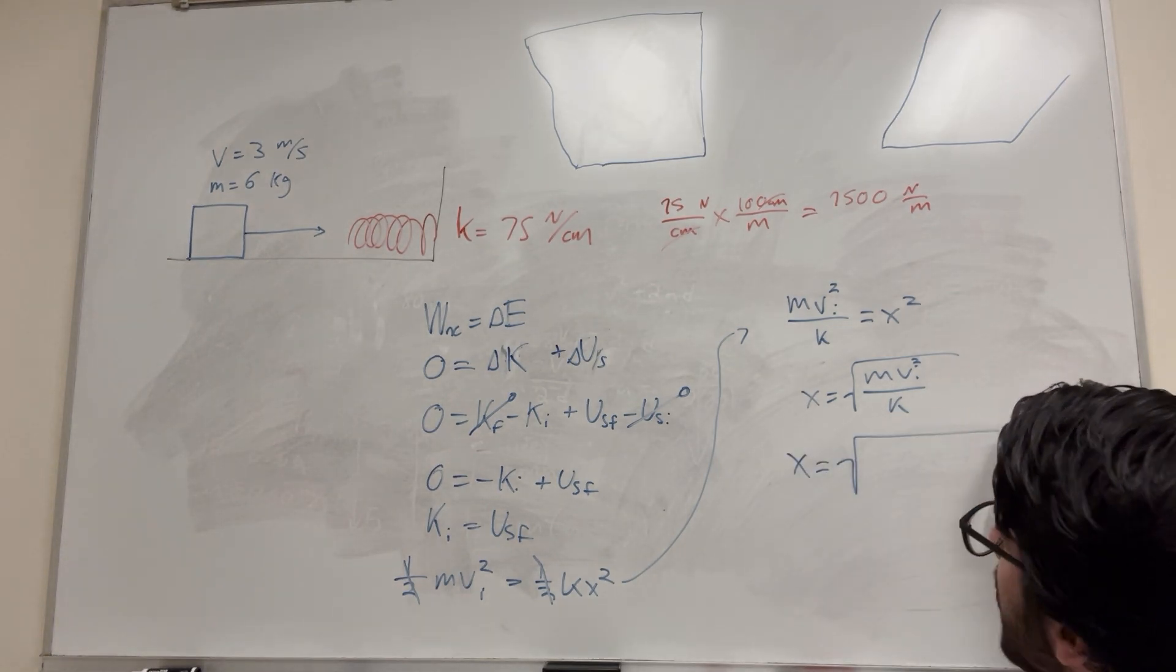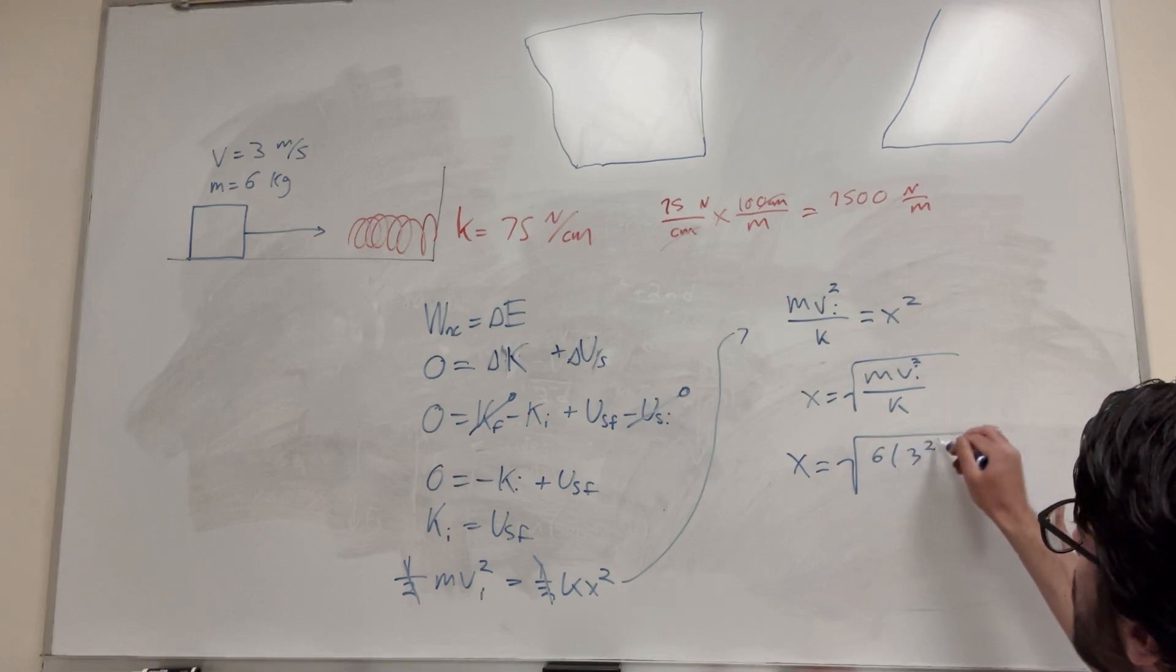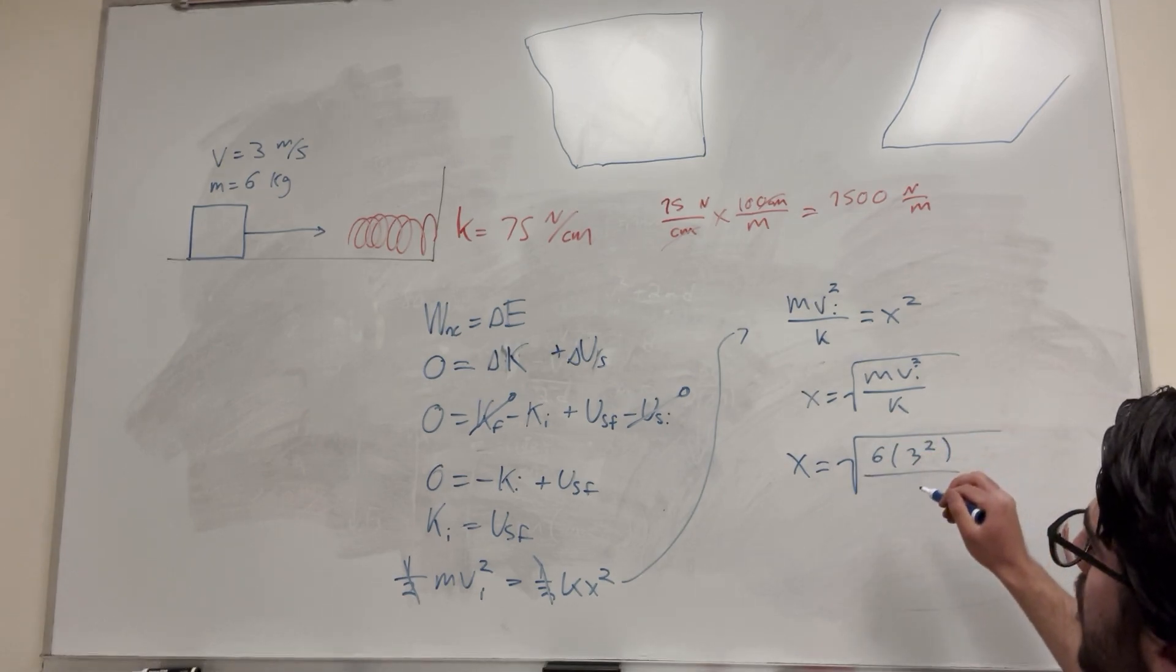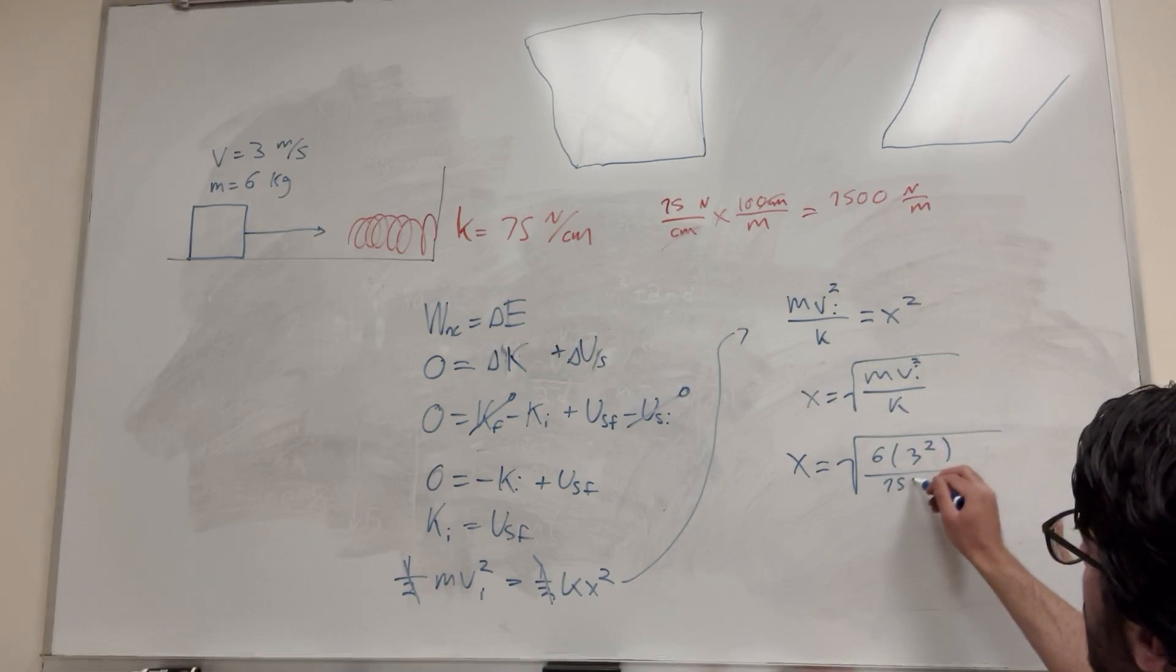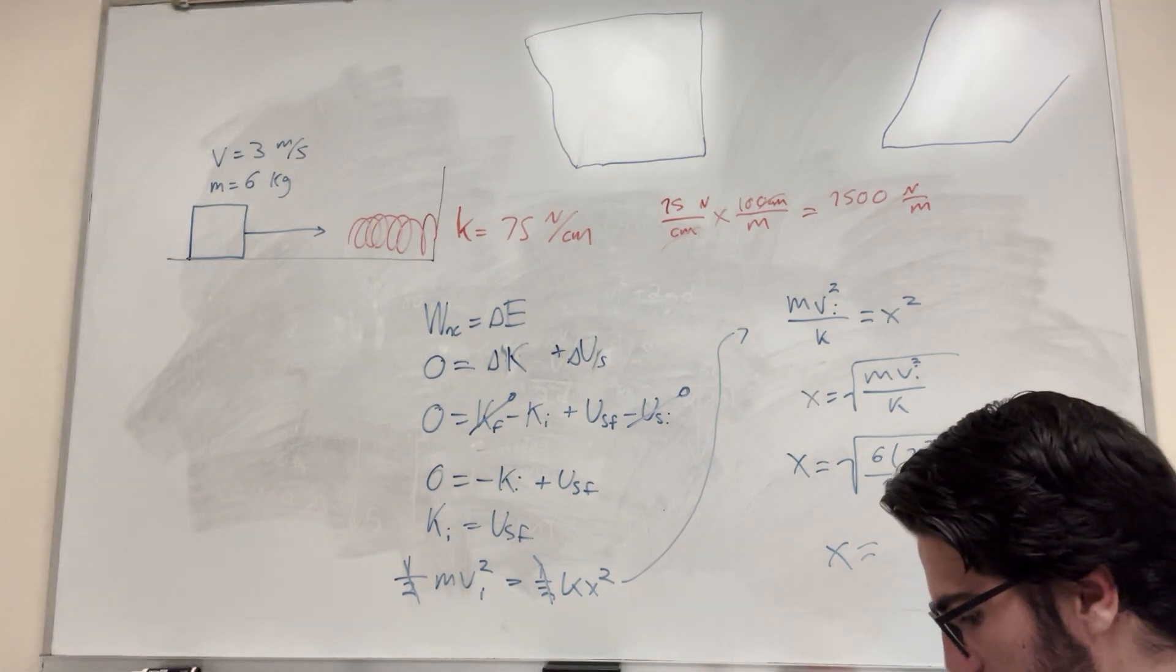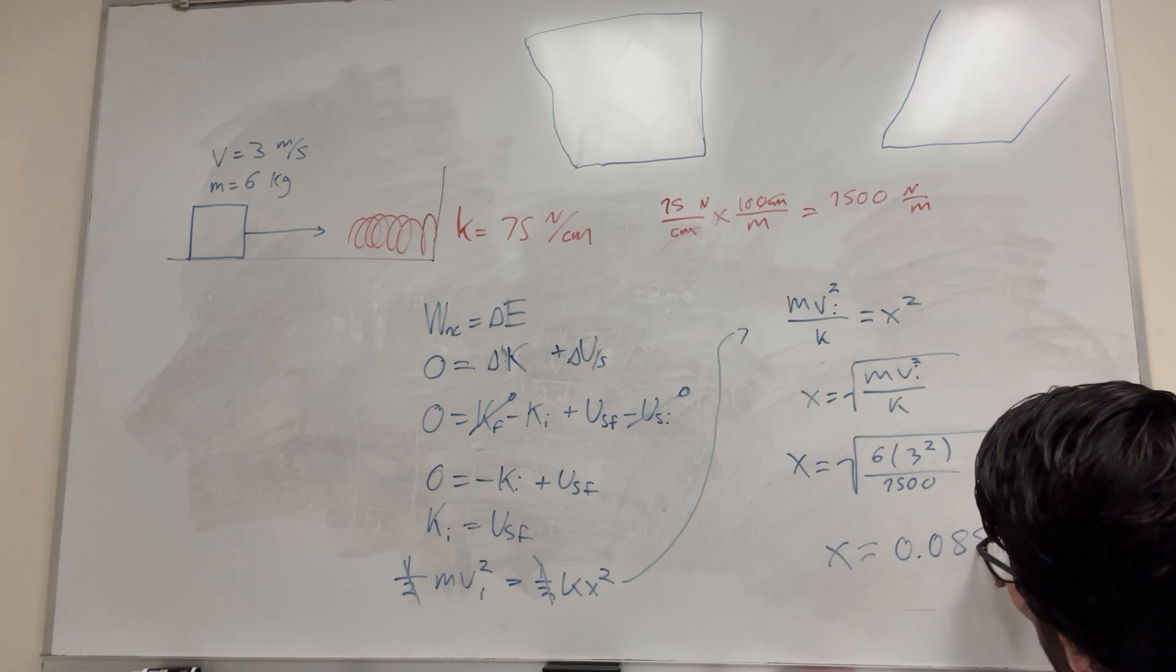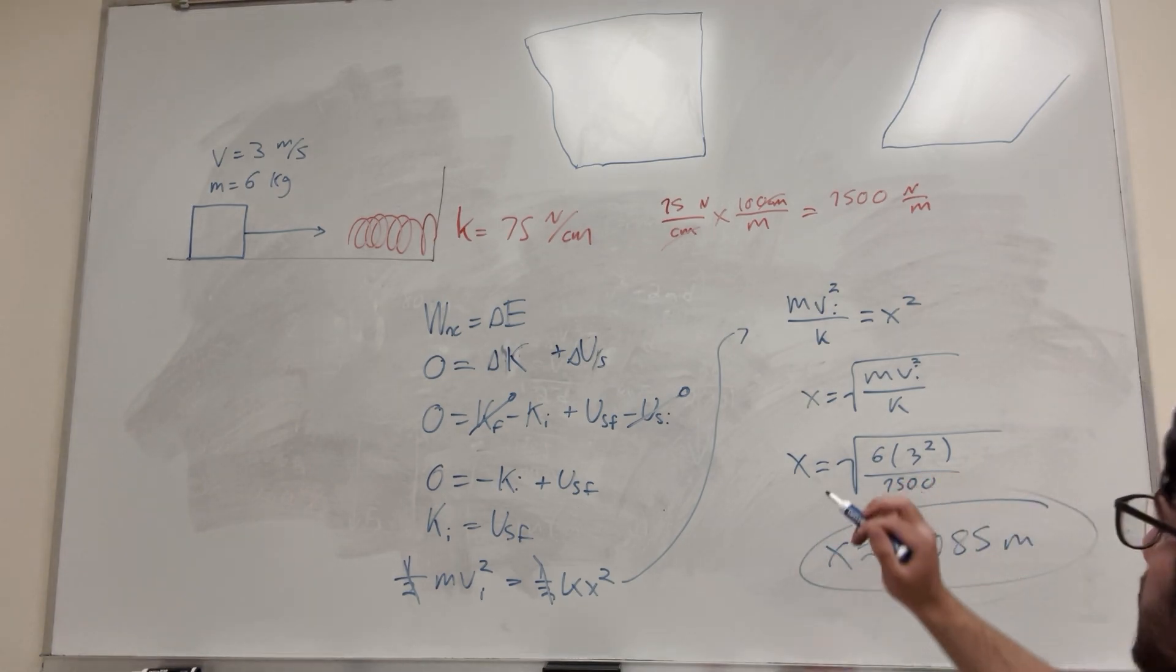So we're going to say X is equal to the square root - so we have mass is 6 kilograms, velocity initial 3 squared, over K which is 7500. And then if you plug that in your calculator, which I have done, you're going to get 0.085 meters. That's how far the spring is going to compress.